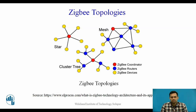Next is cluster tree topology. One Zigbee coordinator is connected to a Zigbee router, and that router is connected to many Zigbee devices, forming a cluster tree structure. So these are the three different Zigbee topologies: star, mesh, and cluster tree.